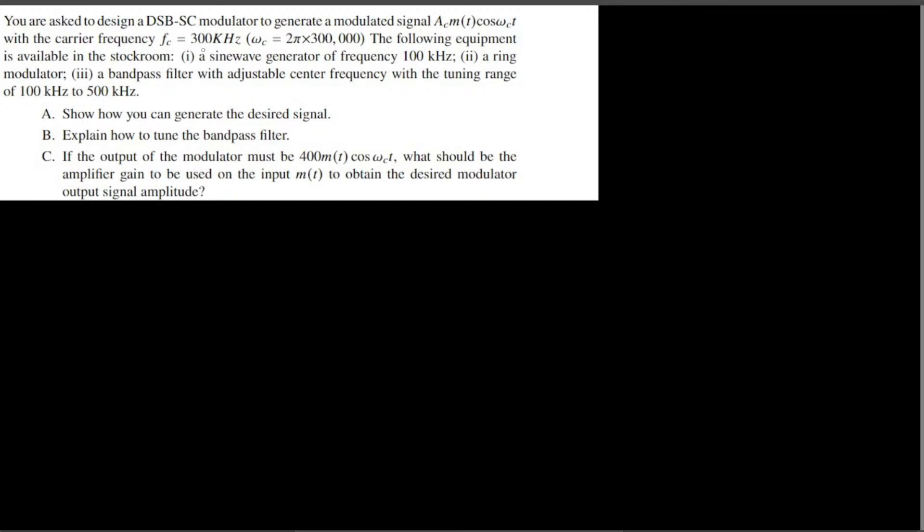To design a DSB-SC modulator to generate a modulated signal m(t)cos(ωct), the carrier frequency fc equals 300 kilohertz, ωc equals 2π times 300,000. The following equipment is available in the stockroom.